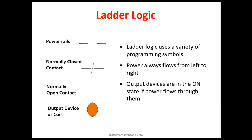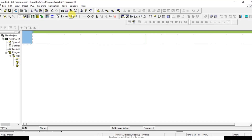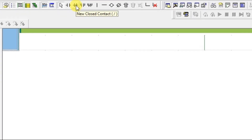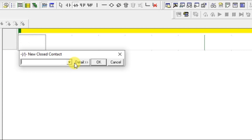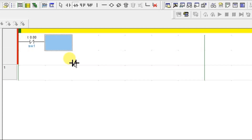Hello everyone, welcome to Automation Community. In this session we are going to see about normally closed contact. As I have already told, normally open contact is one of the important instructions in ladder logic — same with normally closed contact. It is also one of the most important instructions in ladder logic programming. Let us see in CX Programmer. Here you can see this is the normally closed contact, and I will give it the name 'Switch'.